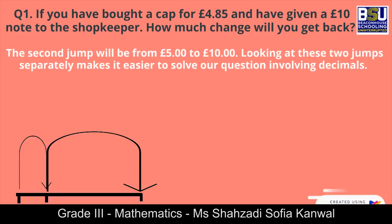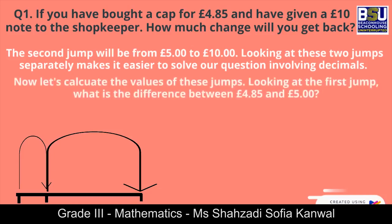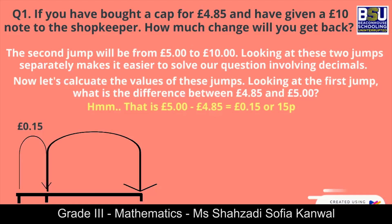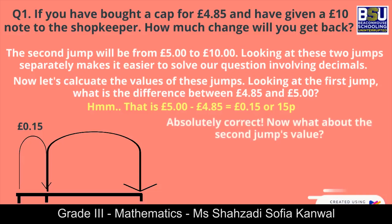Looking at these two jumps separately makes it easier to solve our questions involving decimals. Now let's calculate the value of these jumps. Looking at the first jump, what is the difference between 4.85 pounds and 5 pounds? That is 0.15 pounds, or 15 pence.